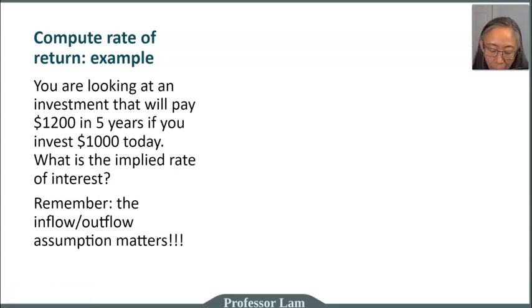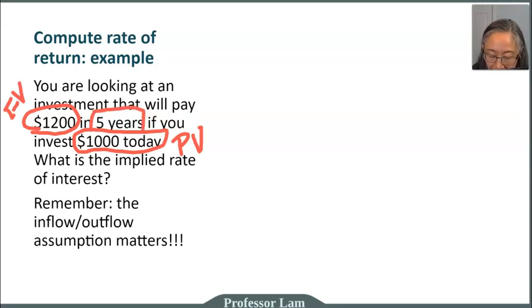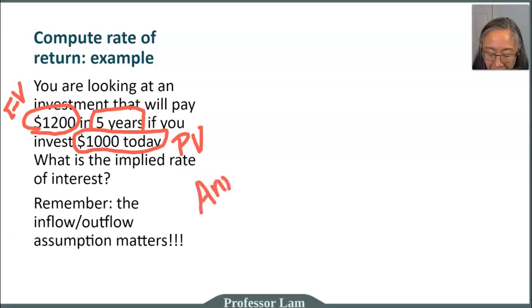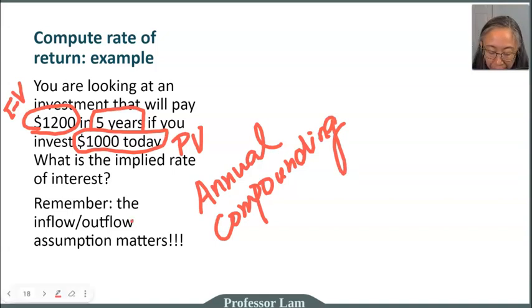There is an investment that will pay you $1,200 in five years if you invest $1,000 today. We want to find the implied rate of interest. You are asked to invest $1,000 today — this is the beginning value, your present value. You're going to get back $1,200, so that is your future value. The investment horizon is five years, so this is your time period. We're going to assume that interest is compounded on an annual basis. We have to be careful about which one we make as an inflow and which one as an outflow.